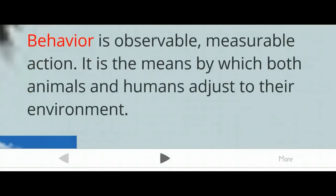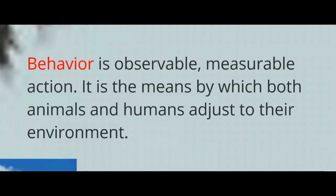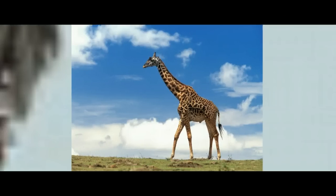We're going to talk a lot about behavior. What is behavior? Behavior is something that is overt — something that is observable, something that you can measure. Psychologists are oftentimes concerned with behavior, looking at animals and humans and the ways they adjust to their environment. For example, what does a giraffe do? How does it get its food? It's those observable things — that's what behavior is.